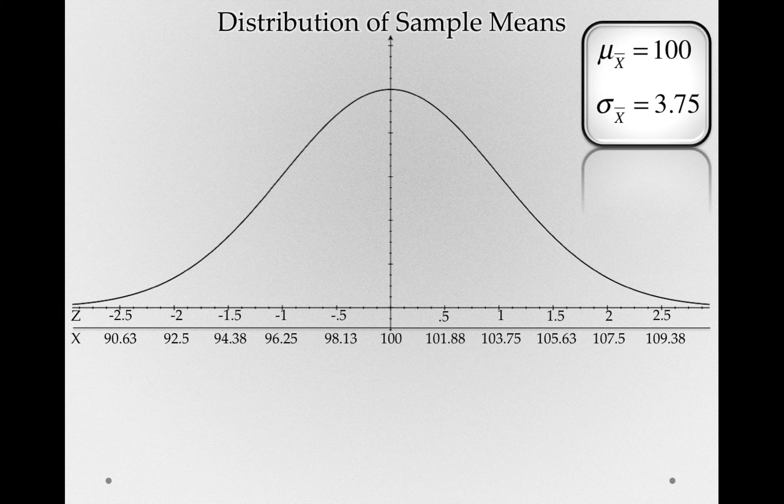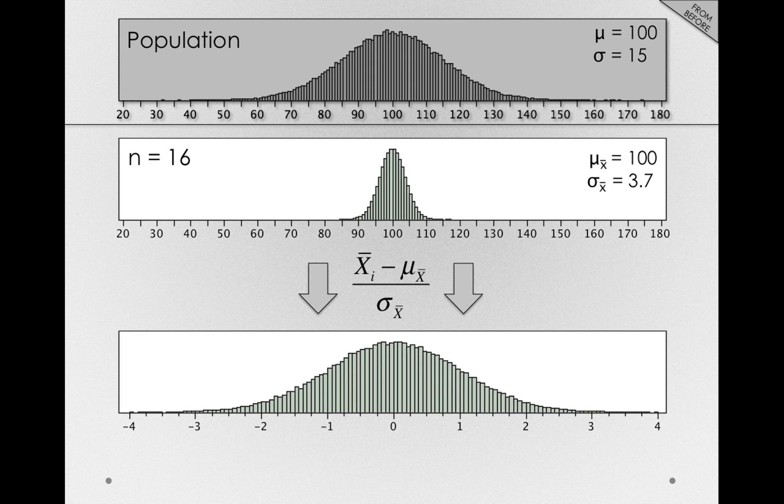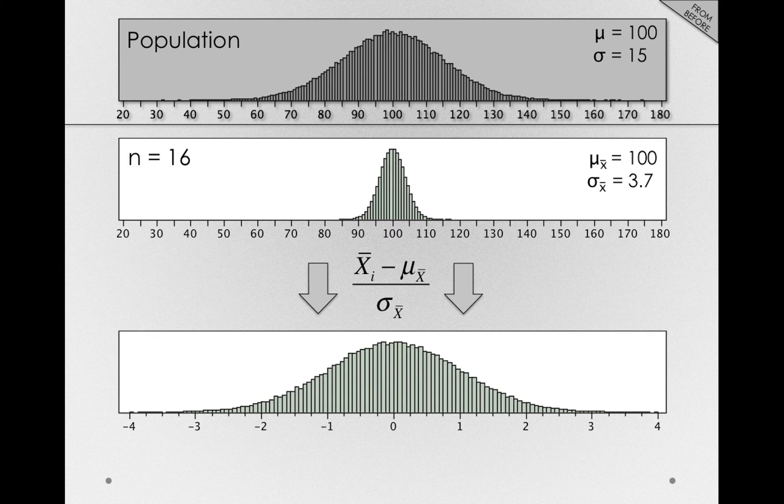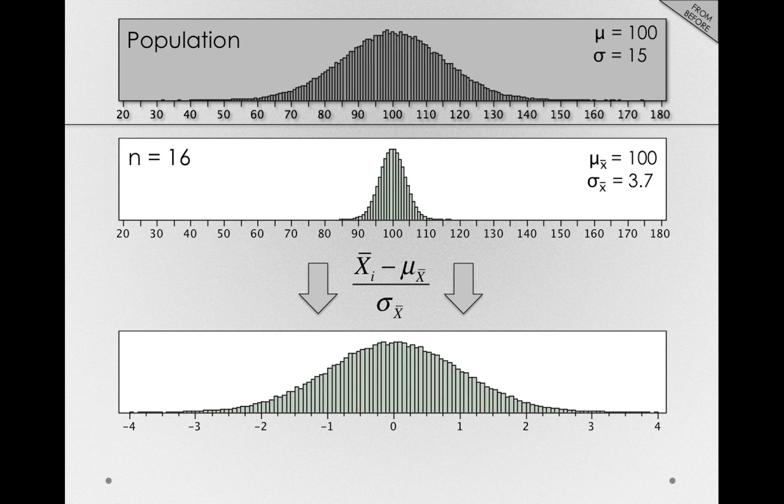And notice that, again, we didn't have to do a sampling experiment. When we had a population, took samples of size 16, then z-scored them, we simply ended up with that unit normal distribution.